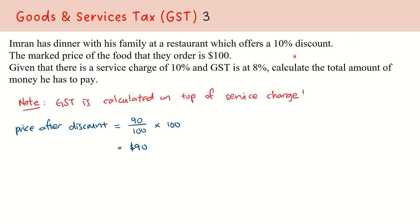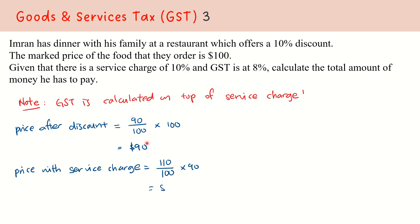Then, service charge is a percentage counted on top of the price of the food you are going to pay for. The price with the service charge will count both the food and the services. So 110% of $90 — including food prices as well as service prices — gives us $99.